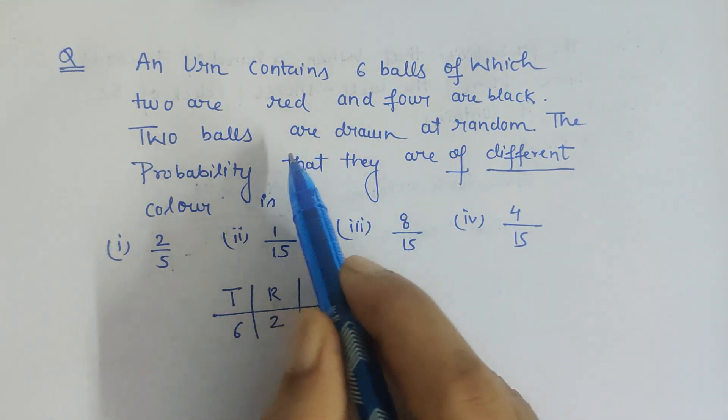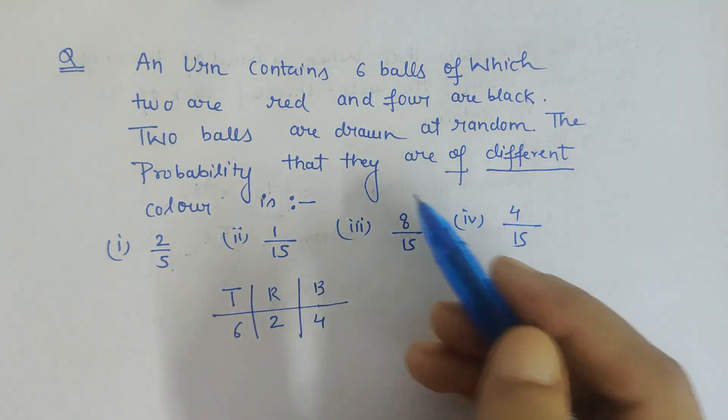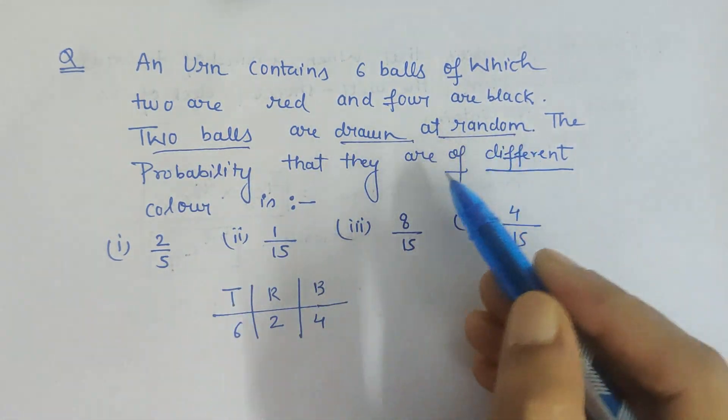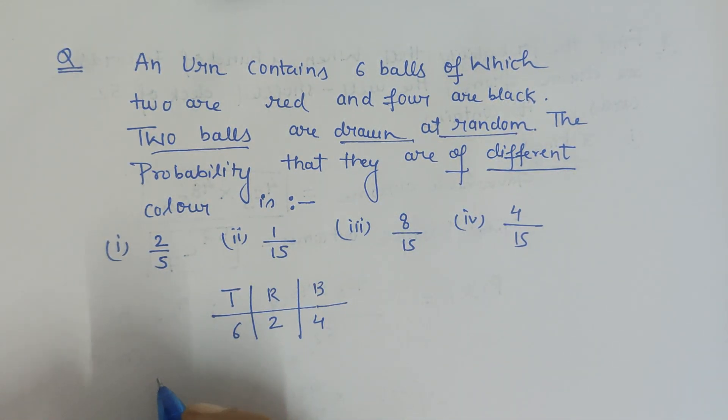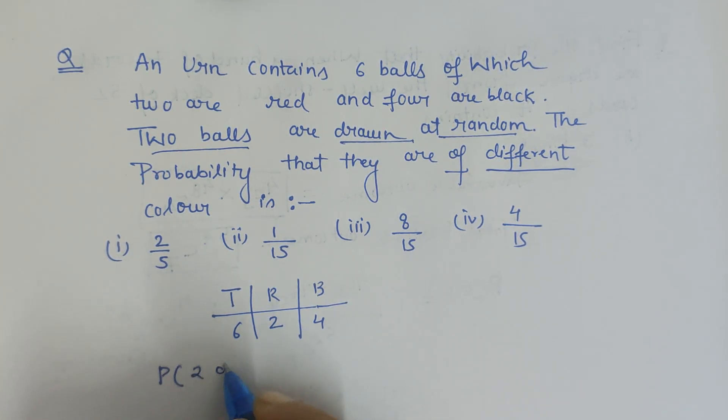What does different color mean? Two balls which are drawn at random are of different color. So we have to find the probability that two balls drawn are of different color. We will calculate this by drawing the balls one by one.